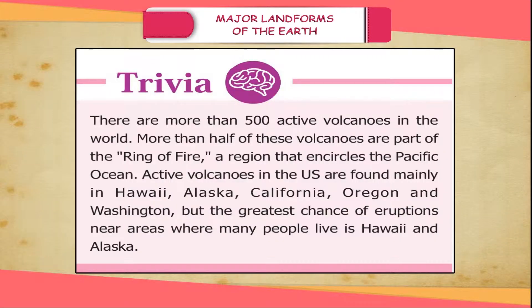Trivia: There are more than 500 active volcanoes in the Ring of Fire, a region that encircles the Pacific Ocean. Active volcanoes in the U.S. are found mainly in Hawaii, Alaska, California, Oregon and Washington. But the greatest chance of eruptions near areas where many people live is in Hawaii and Alaska.